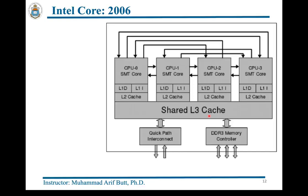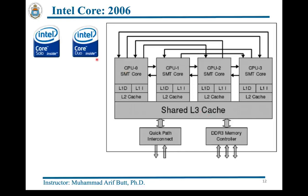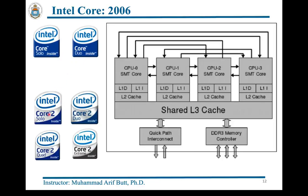Core Solo and Core Duo are the two Intel brands based on the Intel Core microarchitecture, referring to Intel's 32-bit mobile dual-core x86 CPUs. In Core Solo, Intel simply disabled the second core, while in Core Duo both cores are enabled. Then Core 2 Solo, Core 2 Duo, Core 2 Quad and Core 2 Extreme are 64-bit. The Core 2 Quad consists of two Core 2 Duo chips forming a quad-core processor, and Core 2 Extreme are versions with higher frequencies.